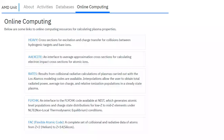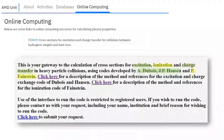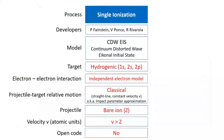I would like to refer to the first of these codes, called HEAVY. The package has two codes for the calculation of cross sections in heavy particle collisions. One, developed by Dubois and Hansen for excitation and charge exchange, is based on a non-perturbative semi-classical atomic orbital coupled-channel method. The other, developed by Feinstein from our laboratory in Bariloche, is a distorted wave perturbative model of ionization collisions. The target should be hydrogenic and limited to 1s, 2s, or 2p states.